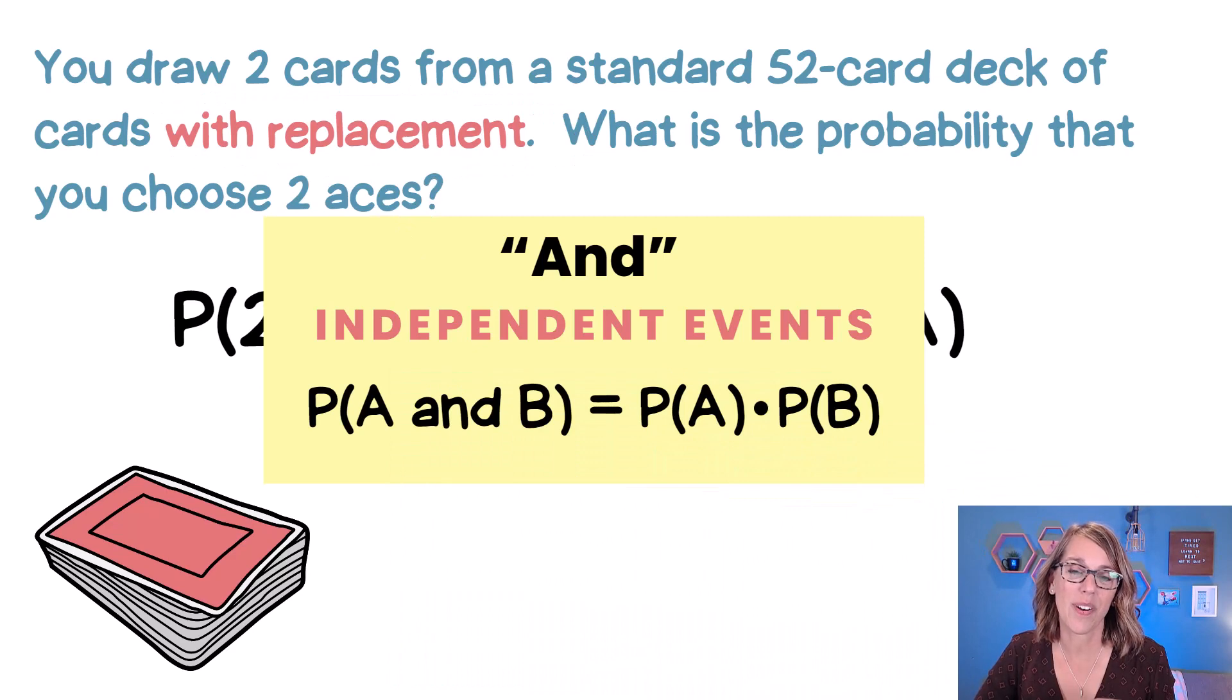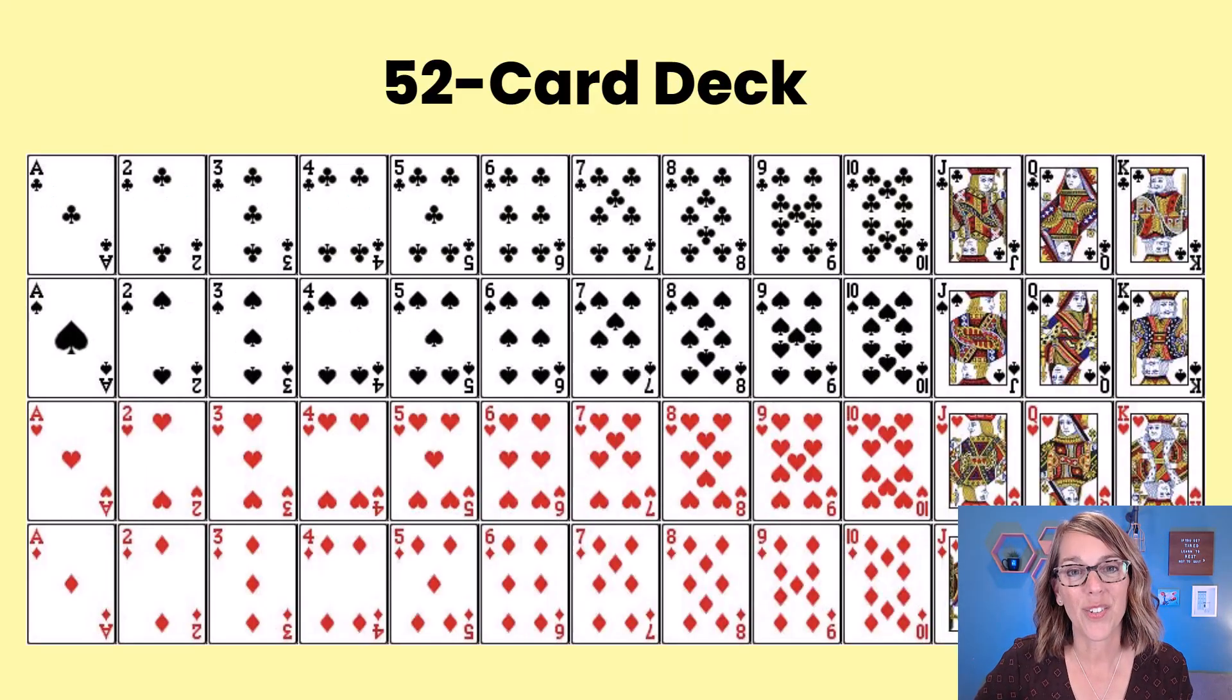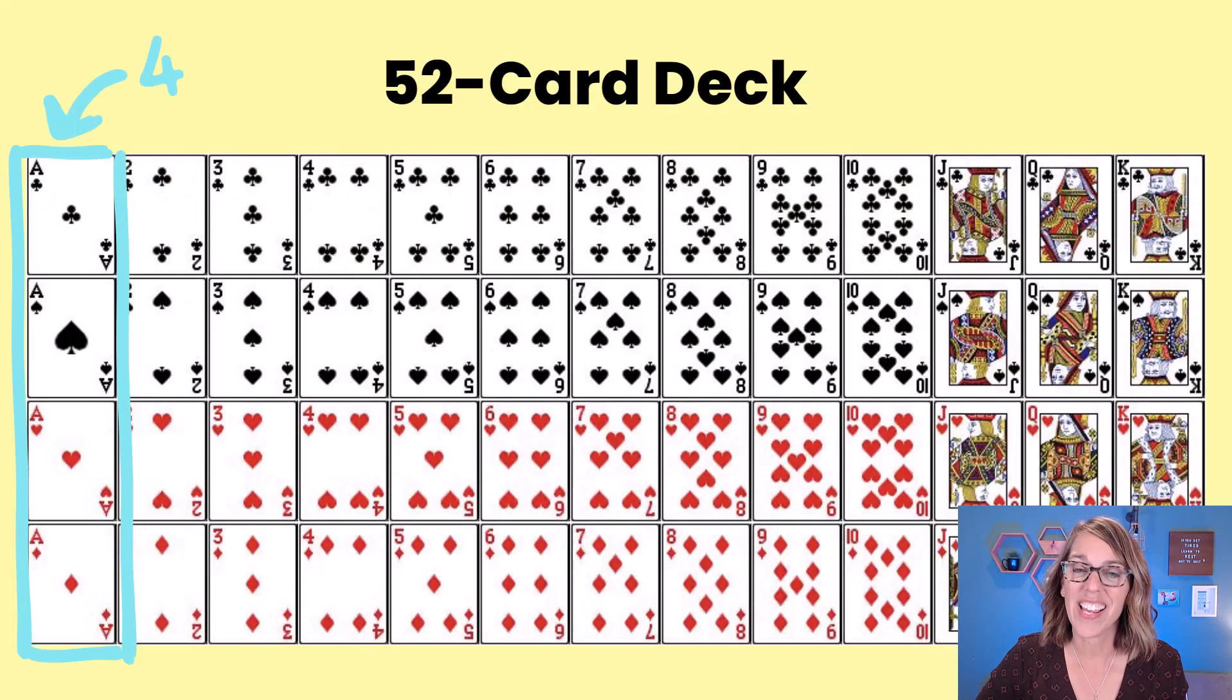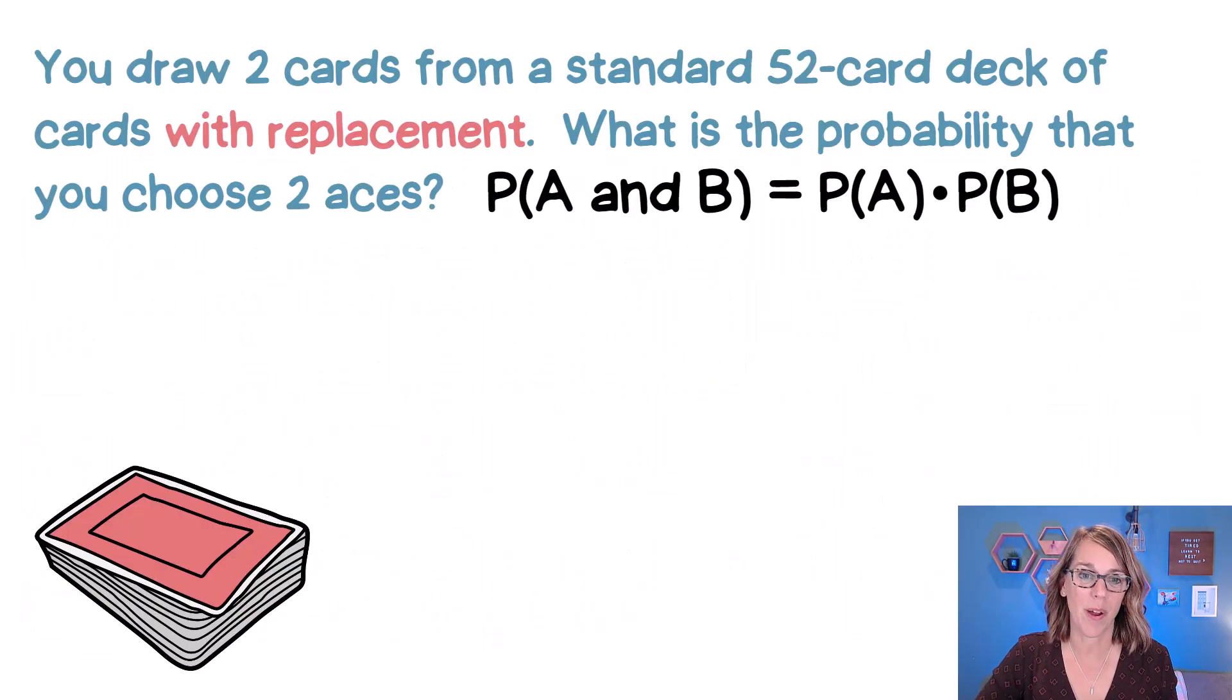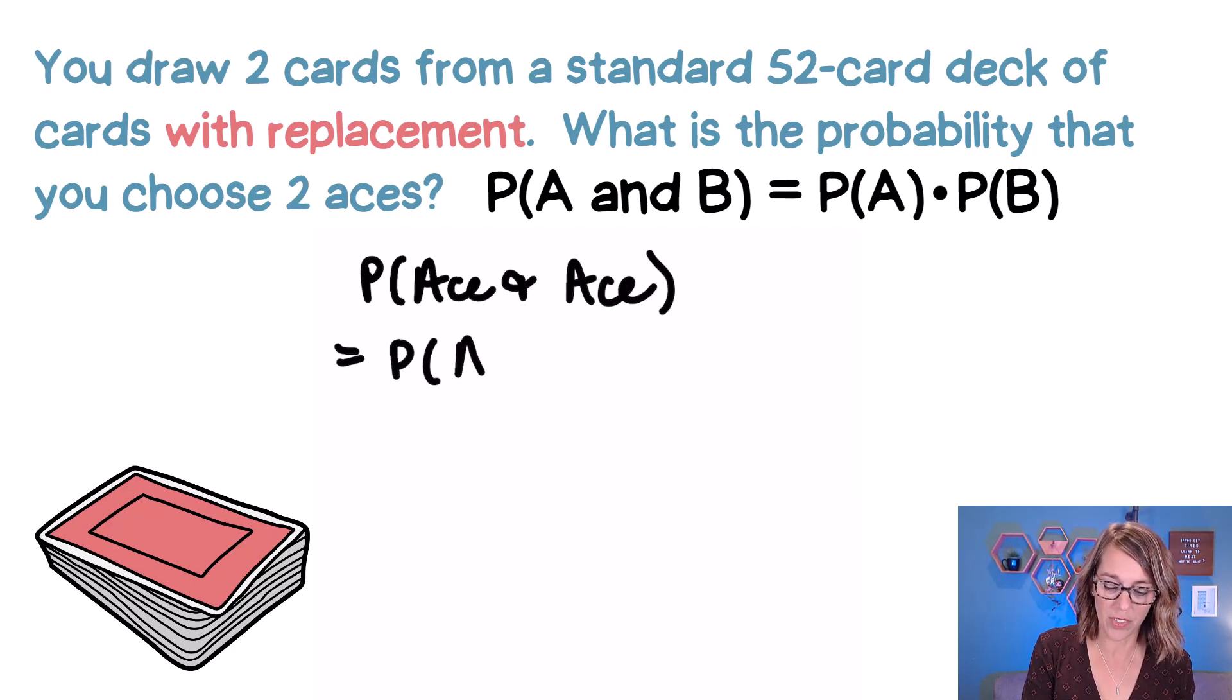We want this form of the and formula, which is the probability of A times the probability of B. Now with that 52 card deck, there are four aces and we're going to need that as we go through this probability. So I've got the probability of two events. That's going to be two aces. So probability of an ace, I'm going to use my and symbol there and an ace. That's the probability of, I'll just use A for ace, times the probability of the second ace.